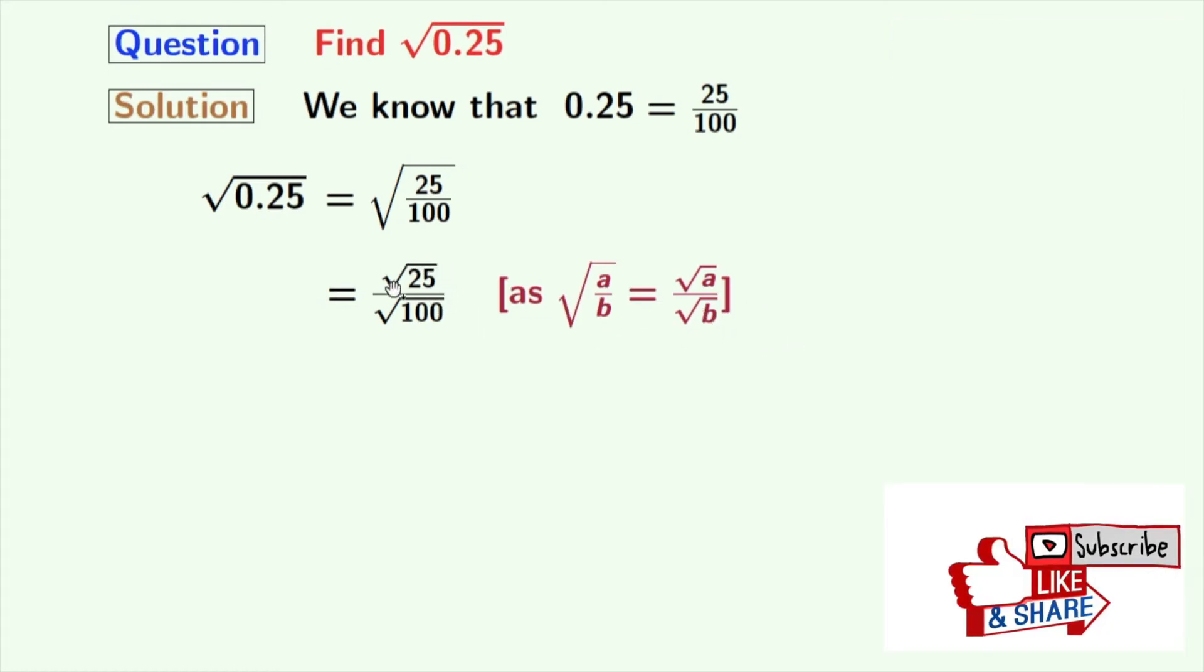As we know that square root of 25 is equal to 5 and square root of 100 is 10. So, from this, we get 5 by 10.